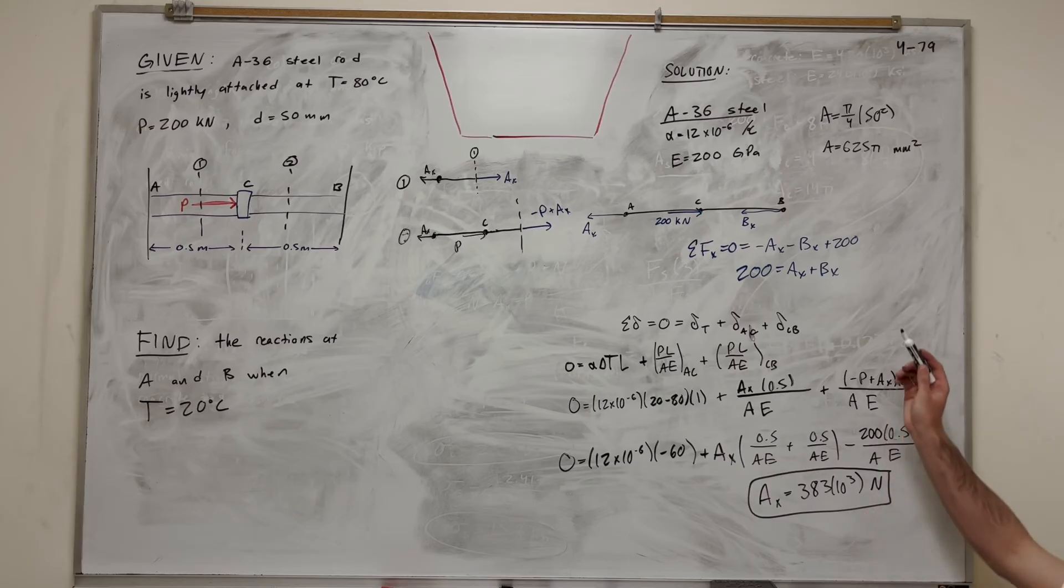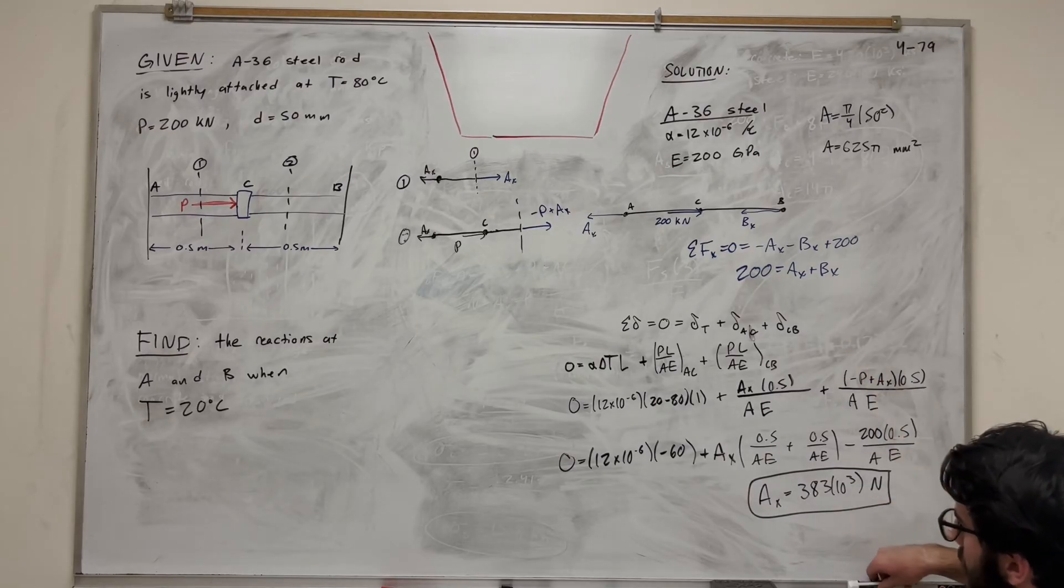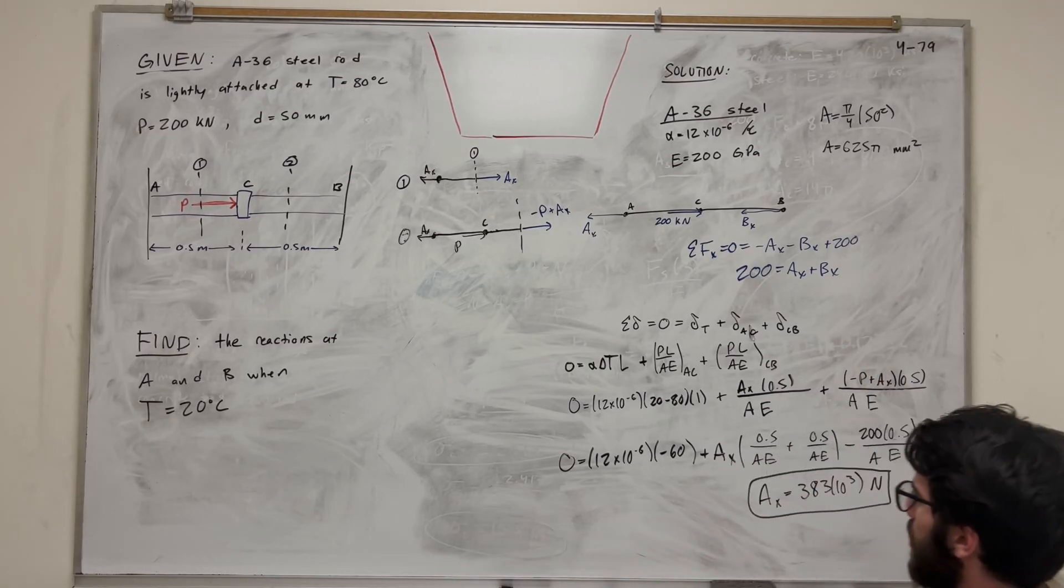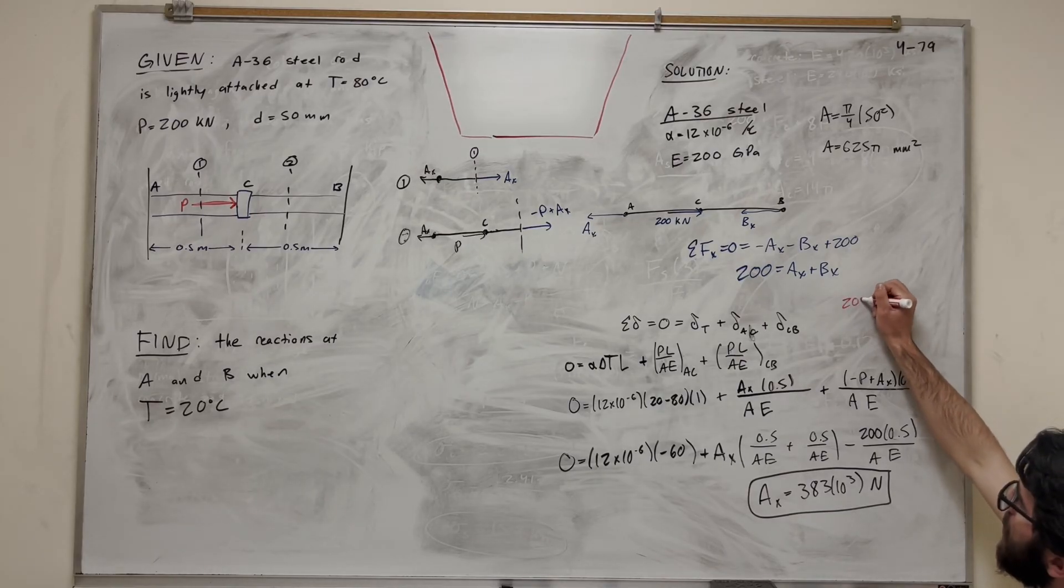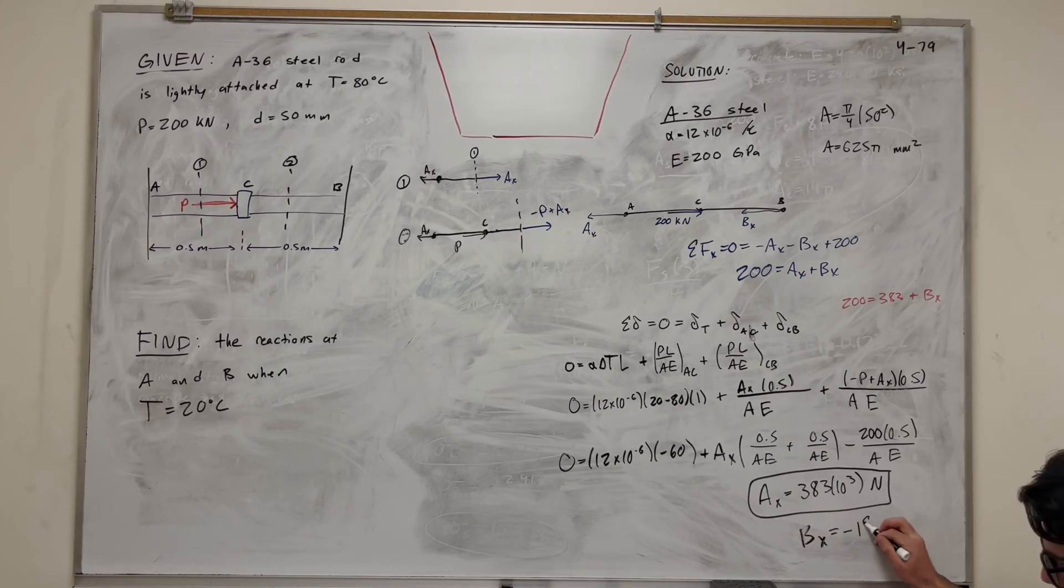Now, B_X is going to be really easy, right? Go back to our equation here. We have this 200 is equal to A_X plus B_Y. So this is just, I guess I'll do this in a different color just to note. So this is going to be 200 is equal to 383, right? This is in kilonewtons, so we've got to make sure to divide by 10 to the third on that, plus B_X, right? Of course, do the math on that. B_X is equal to negative 183 times 10 to the third Newtons. And there you go. There are your two answers to this problem.